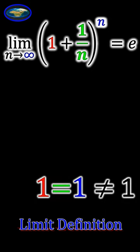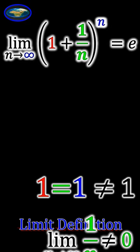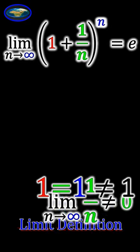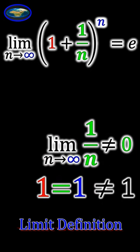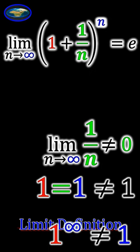Others might argue that the limit of 1 divided by n as n goes to infinity is not zero, which it must be. Otherwise, the limit definition has a major flaw. So we have no choice but to say